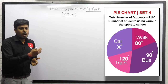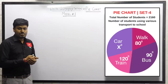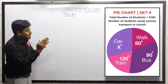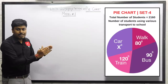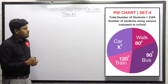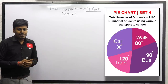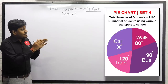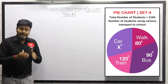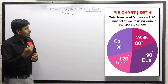The transport modes and their degree values are: walk is 80 degrees, bus is 90 degrees, train is 120 degrees. The value for car is given as x degrees — we have to find how many degrees of students are traveling by car.